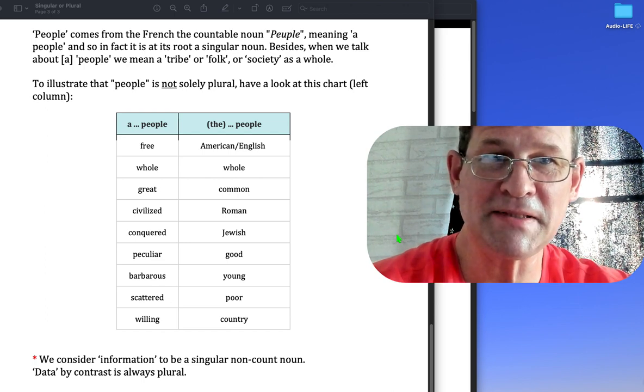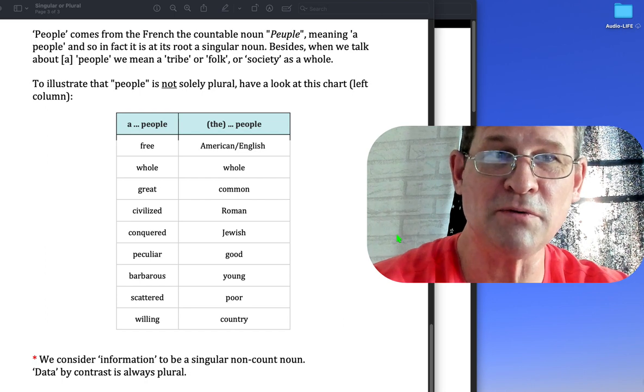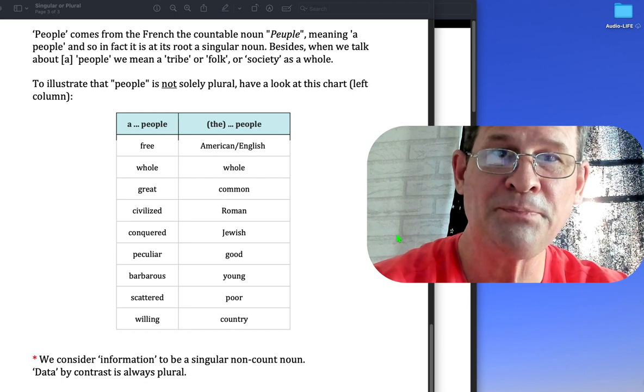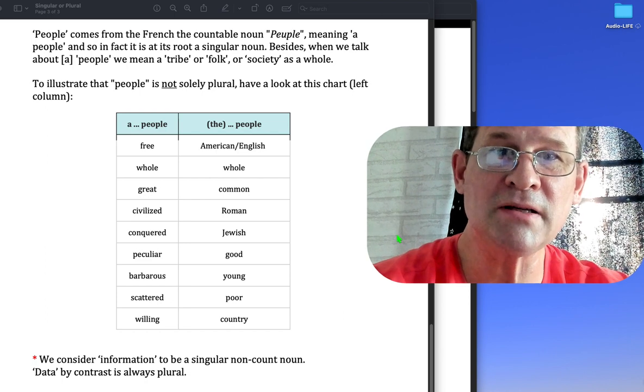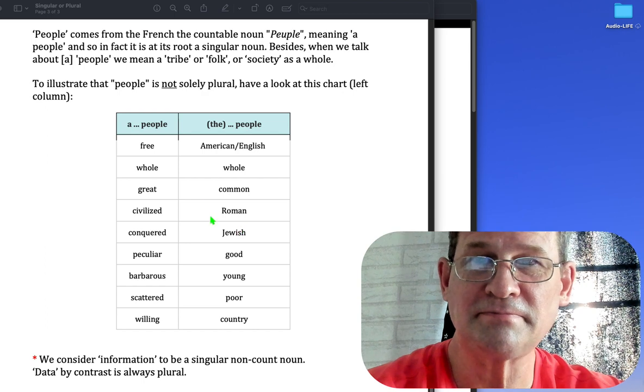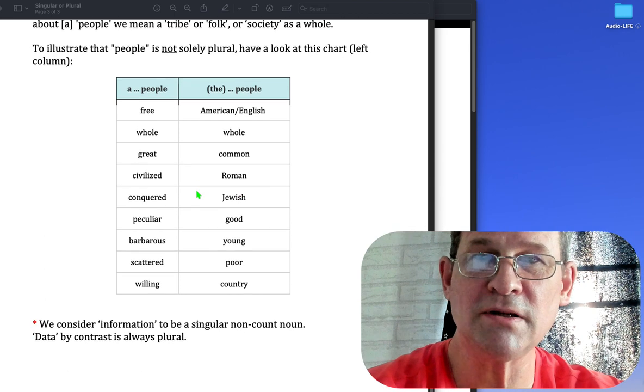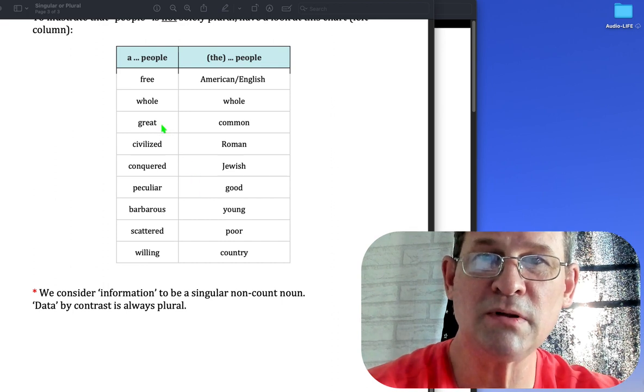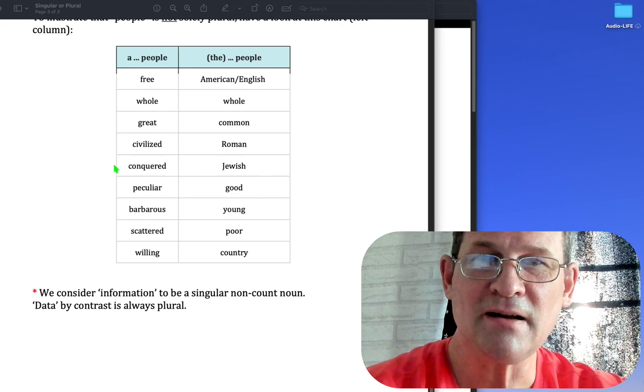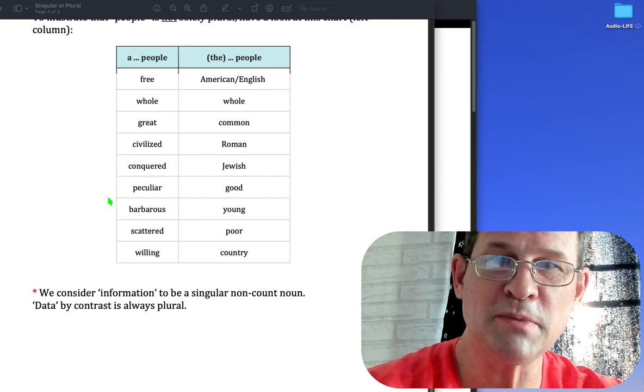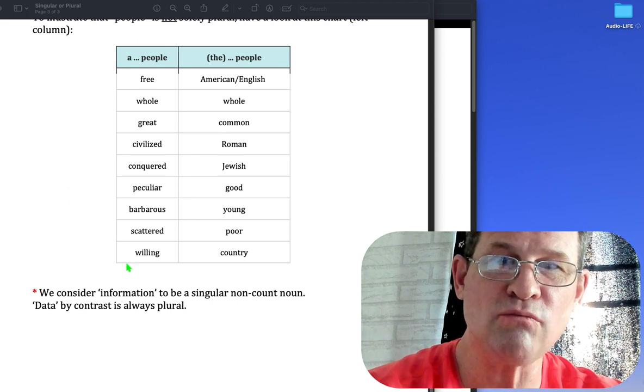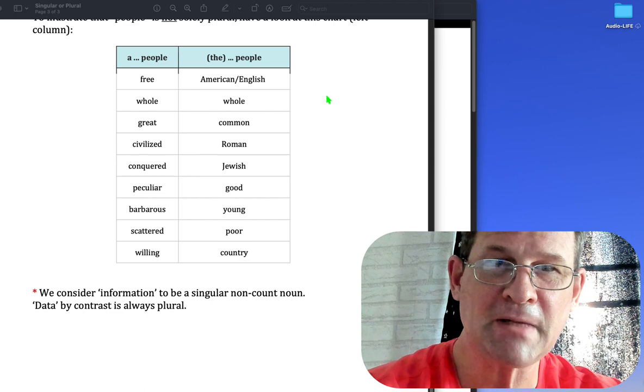To illustrate that people is not solely plural, have a look at this chart. We talk about a free people, a whole people, a great people, a civilized people, a conquered people, a peculiar people, a barbarous people, a scattered people, and a willing people.